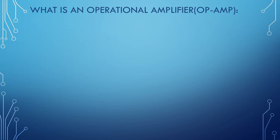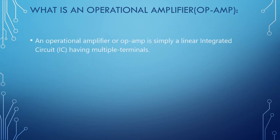So now let's move on to the topic. An operational amplifier, or usually called as op-amp, is nothing but a linear integrated circuit having multiple terminals. Integrated circuits are nothing but many simple electronic circuits built on a semiconductor chip, which is an integration of circuits that helps in performing specific functions.